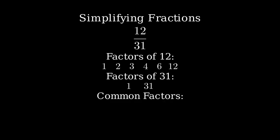To simplify the fraction, we need to find the greatest common factor of 12 and 31. Looking at both sets of factors, we can see that 1 is the only number that appears in both lists. This means that 1 is the greatest common factor of 12 and 31.